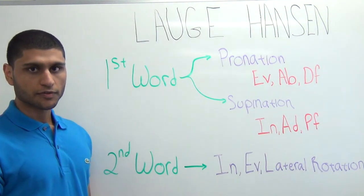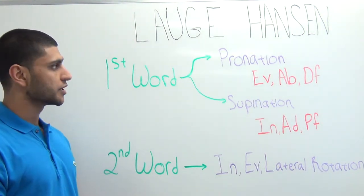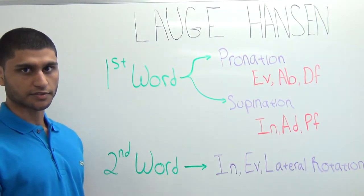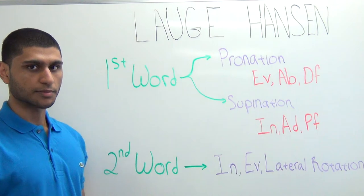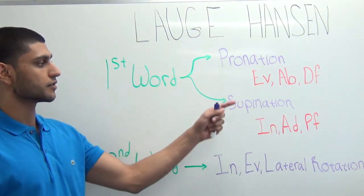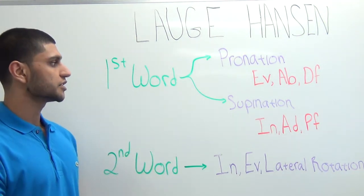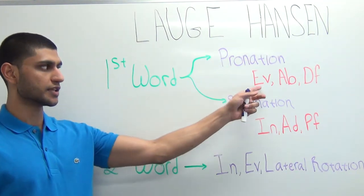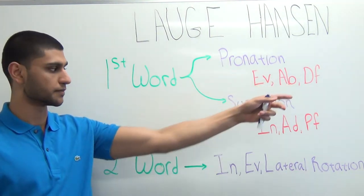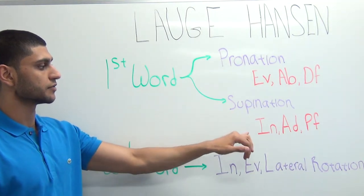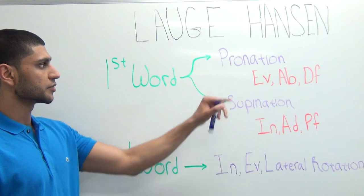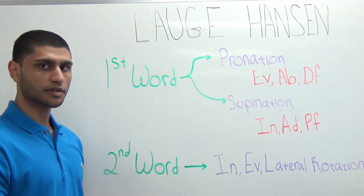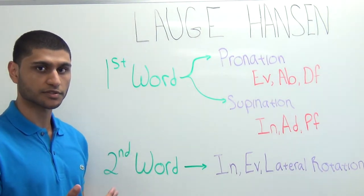Lauge-Hansen is a two-word ankle fracture classification system based on two biomechanical positions. The first word describes the position of the foot during the time of injury — either pronated or supinated. Pronation is a combination of eversion, abduction, and dorsiflexion. In the pronated position, the medial ligaments or the deltoid ligaments of the ankle are fully stretched, and therefore more susceptible to injury.